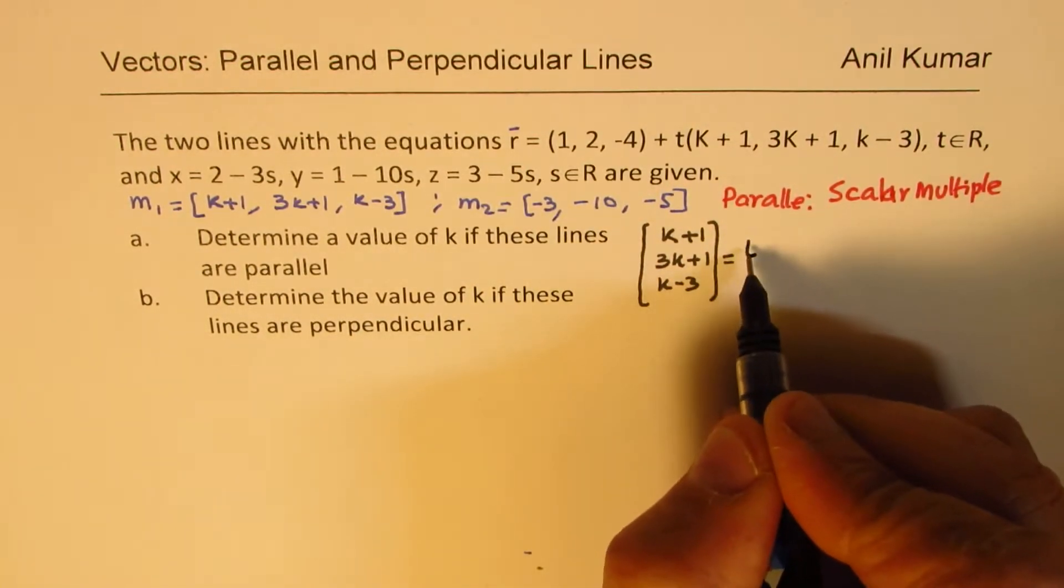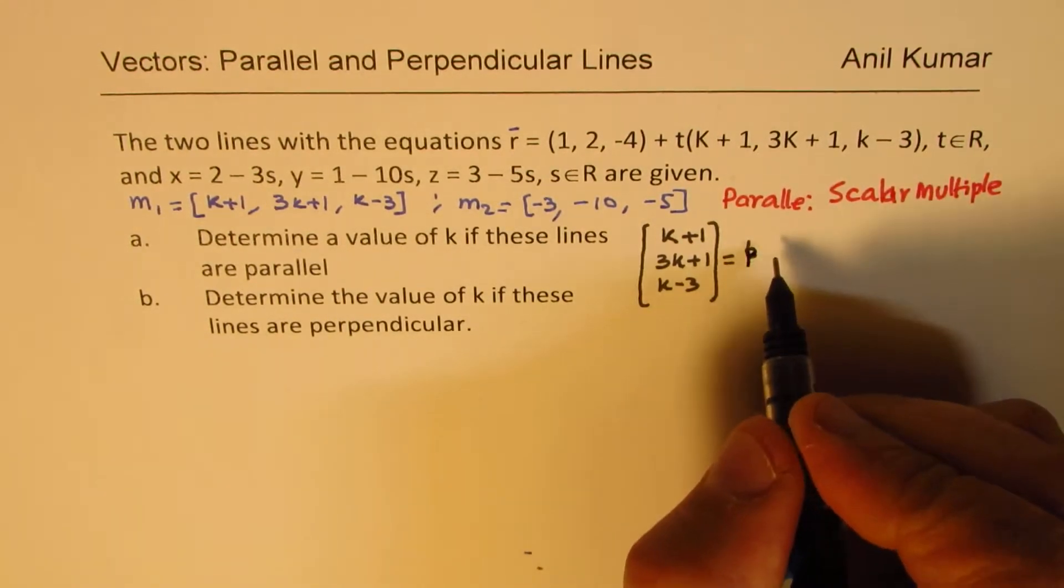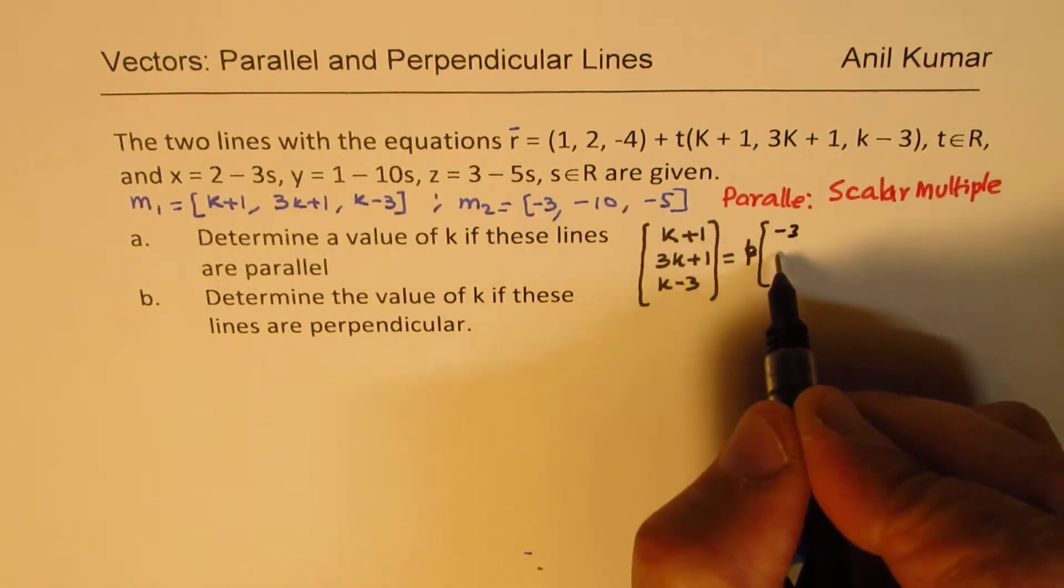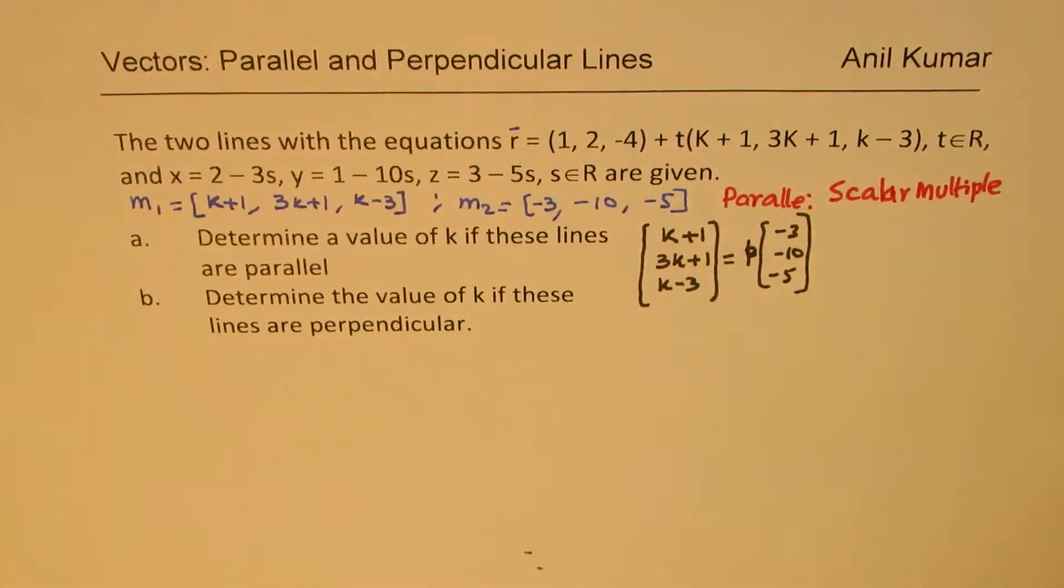...should be scalar multiple of the other one. So we can say p times—let me use some other parameter since t has been used—so let's say p times (-3, -10, -5). That is what we need to solve for.